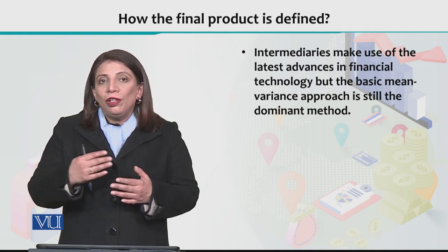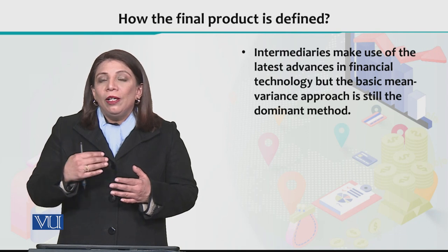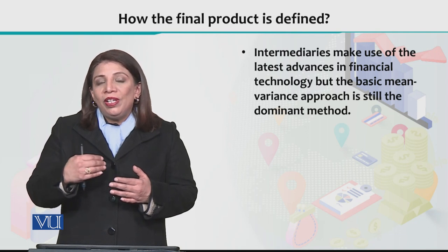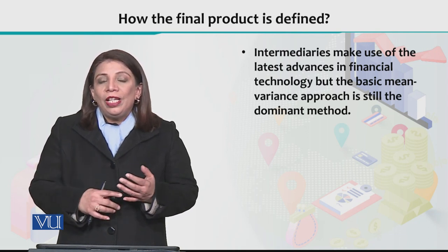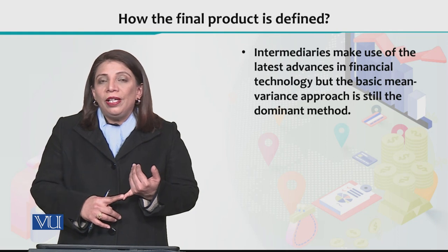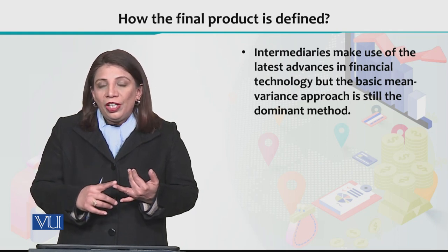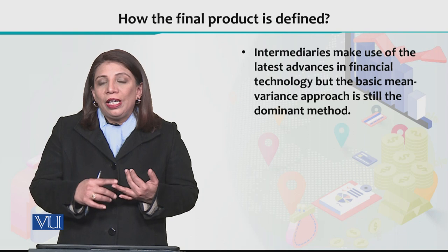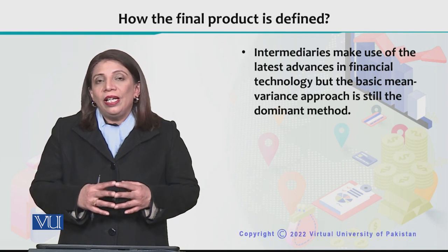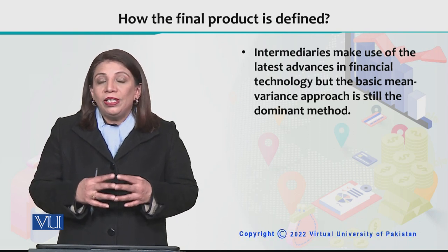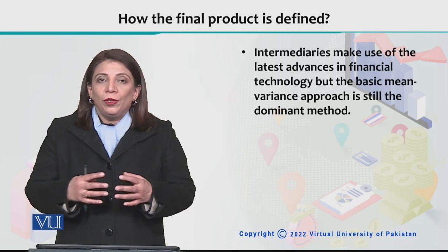The main mean-variance approach, which we have discussed, uses expected return, and you can also use it extensively to decide what the optimal allocation will be.